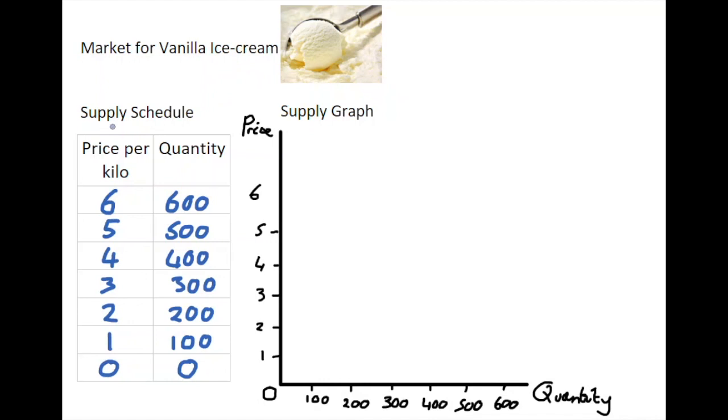So what we have down here is a supply schedule. This shows the price per kilo and the quantity supplied in the market in table form, and what we're going to try and do is translate that into a supply graph over here on the right hand side. In the supply schedule we have the price per kilo and we have the quantity supplied. So this is the amount that suppliers are willing and able to sell at different prices on the market.